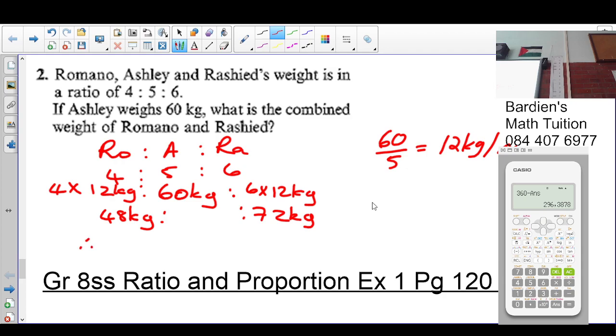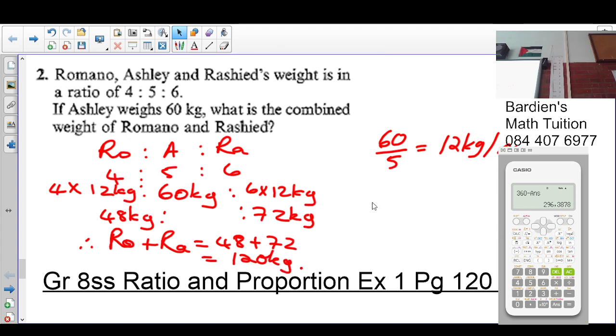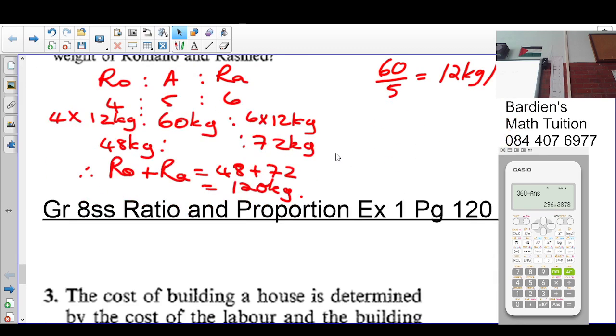Therefore, the combined weight of Romano and Rashid is going to be 48 plus 72, which is going to give you 120 kilograms. Okay, we all understand. There's another way of doing it.